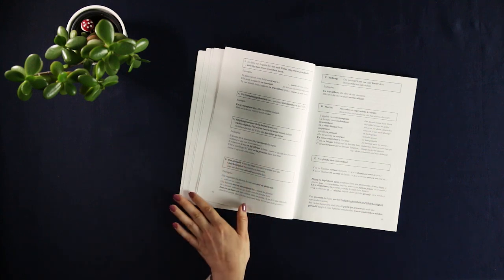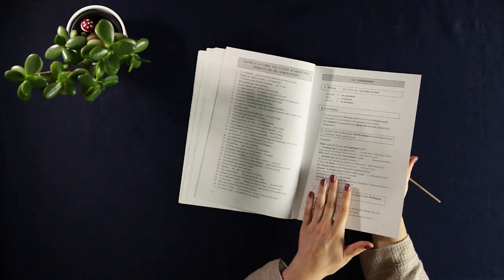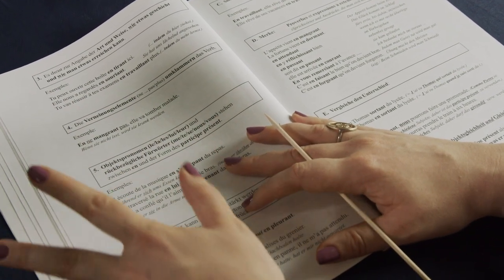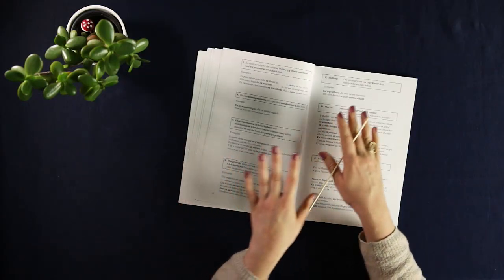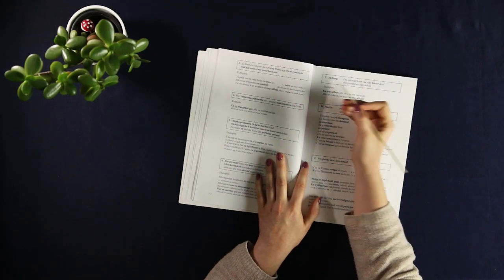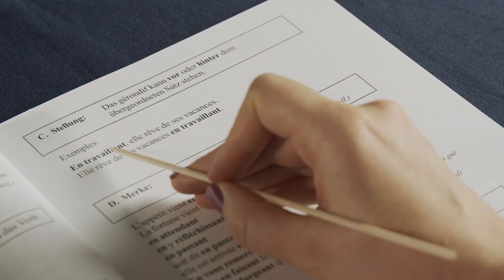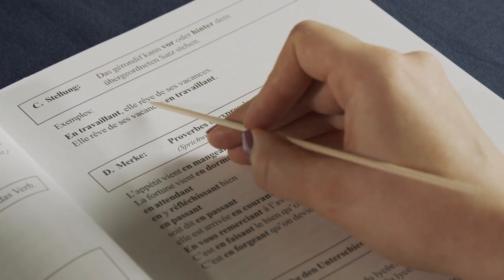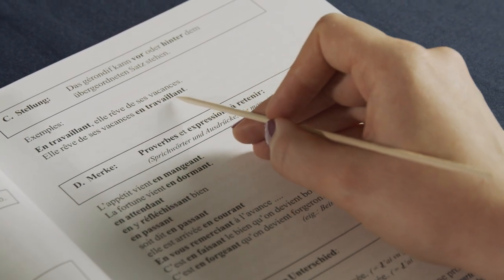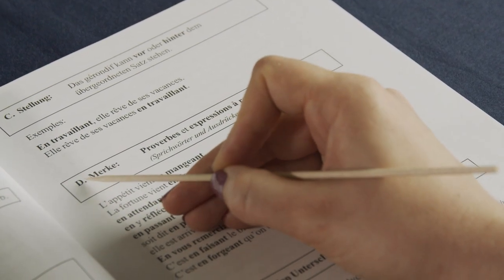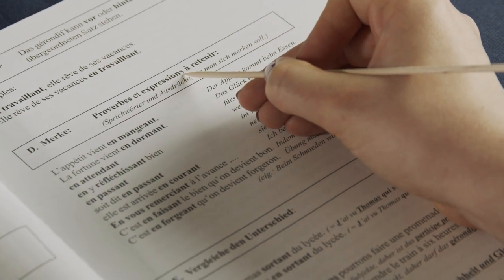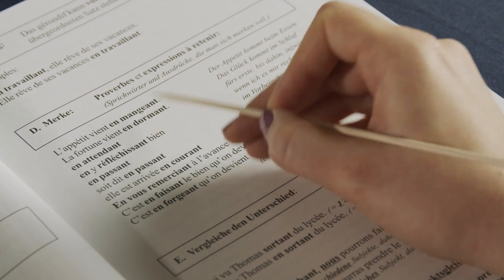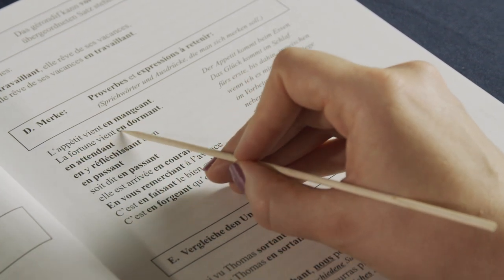Alright, so we have six points on how to use it: one, two, three, four, five, six. Now, C is about syntax. The gérondif can be both at the start and at the end of the sentence. En travaillant, il rêve de ses vacances. Il rêve de ses vacances en travaillant. Then under D, you have some proverbs and expressions like l'appétit vient en mangeant, the appetite comes with eating, or la fortune vient en dormant, so fortune comes while you're sleeping.